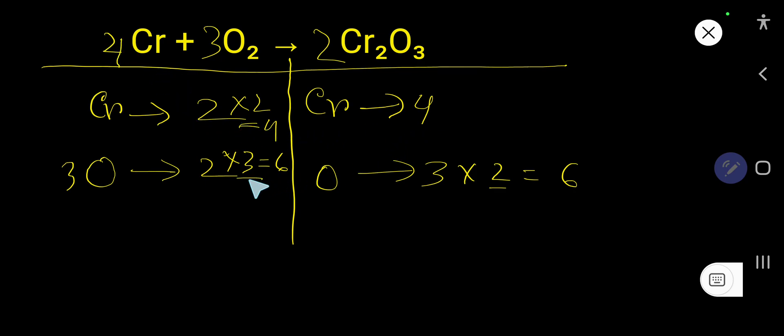So 4 chromium, 4 chromium, 6 oxygen, 6 oxygen. Look, everything is balanced. So you can say that this is the balanced chemical equation.